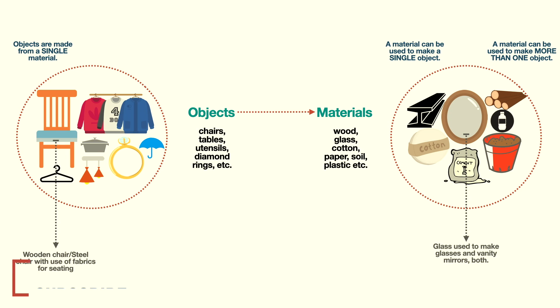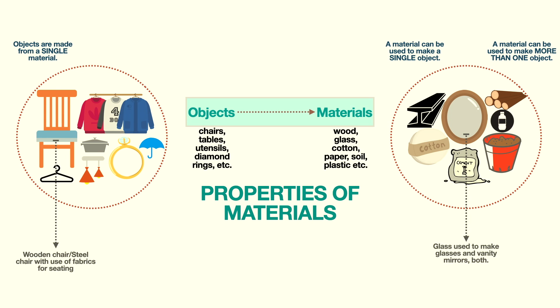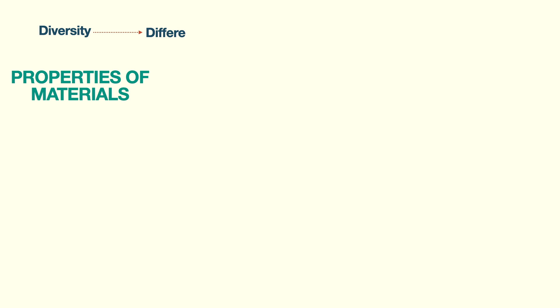So what is the factor which makes all of this possible — the variety of objects that we have? It is the distinct and numerous properties of materials. The choice of material will depend on the purpose of the object we want to make using that material.